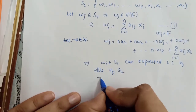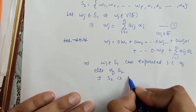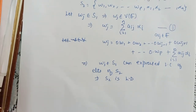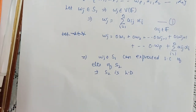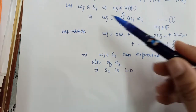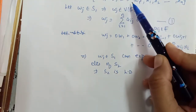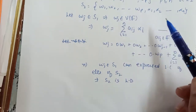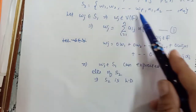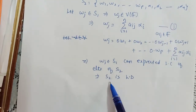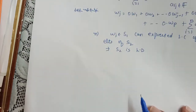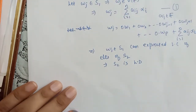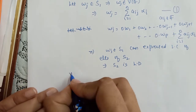This means S₂ is a linearly dependent set. By the definition of linear dependence, if one element of a set can be expressed as a linear combination of the other elements, the set is linearly dependent. So S₂ is linearly dependent.